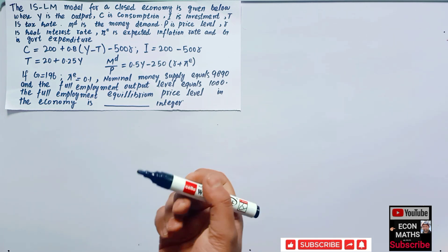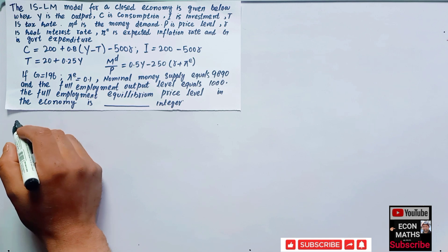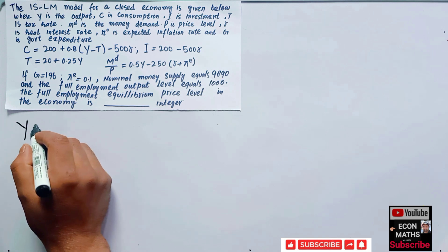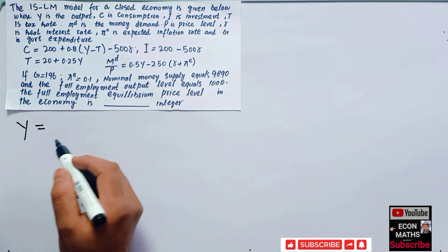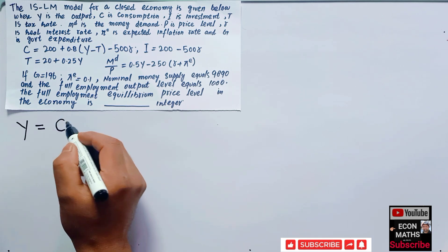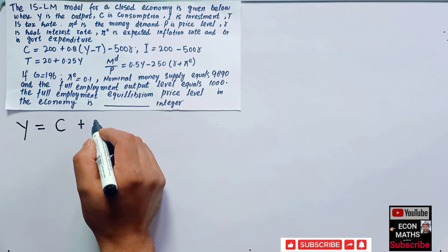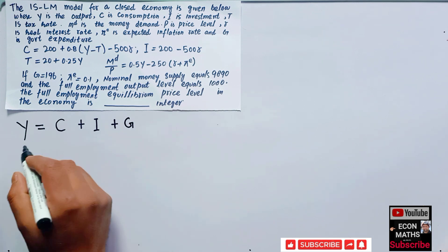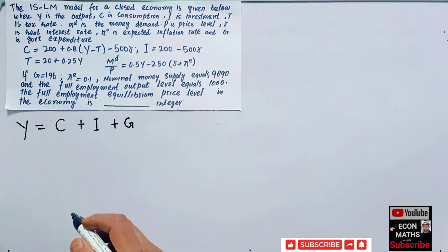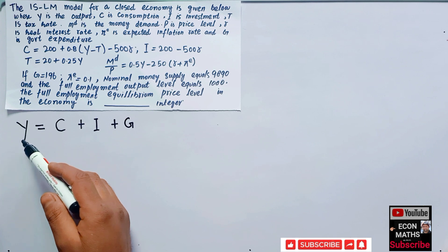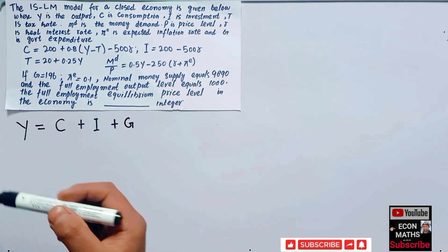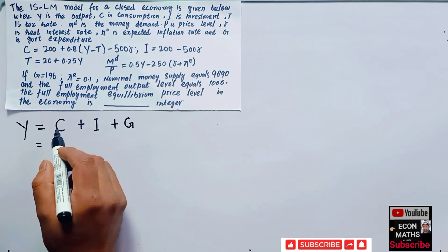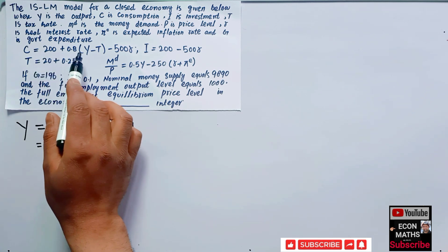Aggregate supply equals aggregate demand, or Y equals consumption expenditure plus investment expenditure plus government expenditure. This is the aggregate demand equals aggregate supply relationship. We now substitute the given values into this expression.